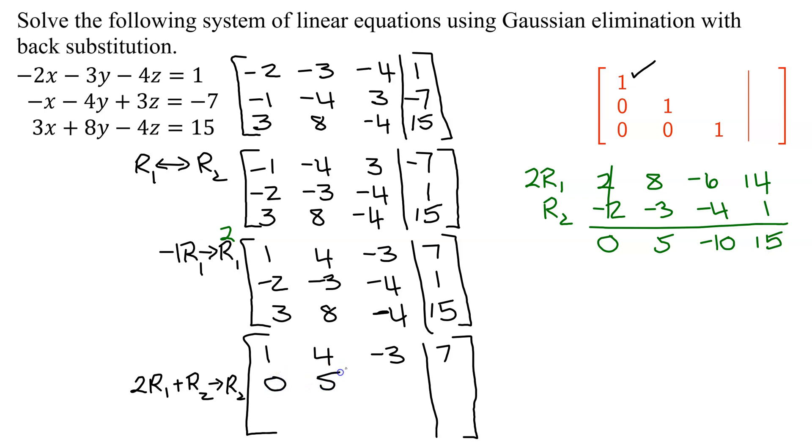So that is my new row 2, 0, 5, negative 10, and 15.